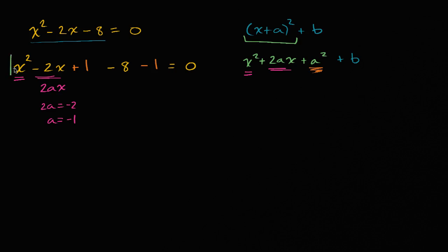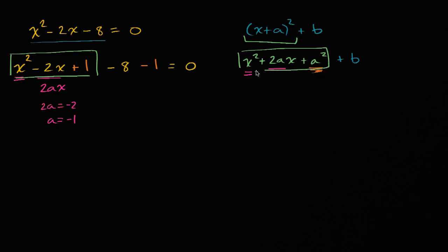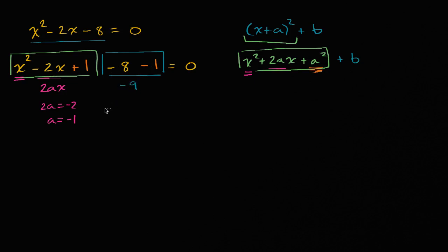Now I've added and subtracted the same thing, but this part of the left-hand side now matches our pattern: x squared plus 2Ax, where A is negative 1, so it's minus 2x, plus A squared — that's negative 1 squared — and then the remaining part is the plus B. So we can see that B is equal to negative 9, since negative 8 minus 1 is negative 9.